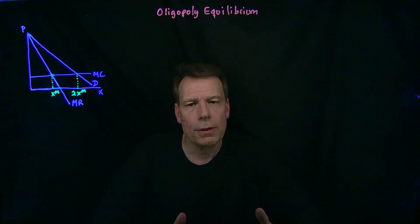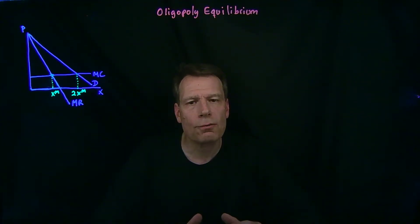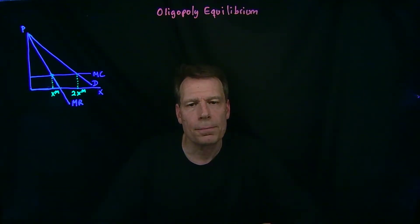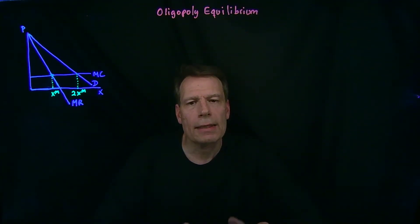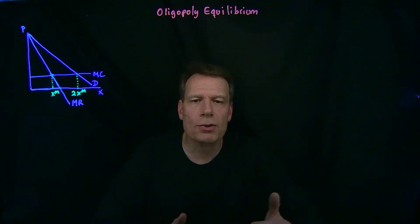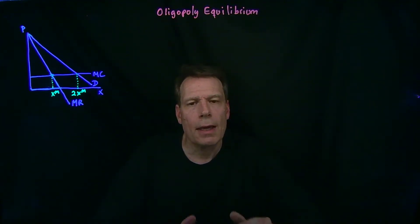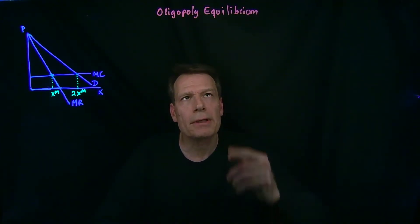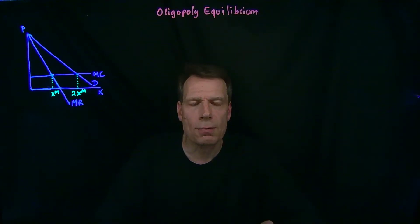An oligopoly is a market structure where several firms are competing with one another, but are protected from outside competition by barriers to entry that keep new firms from entering the market. We think in particular about an oligopoly with just two firms, and how one firm might decide how much to produce given how much the other firm is producing. Now we want to ask: what would happen if both firms are thinking that way? What would be the oligopoly equilibrium that emerges as a result?